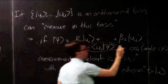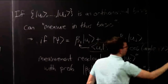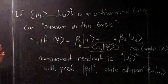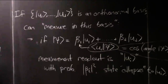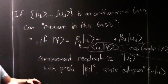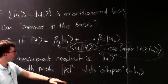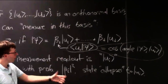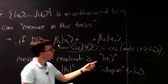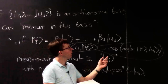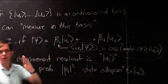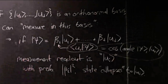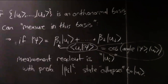Those are a couple of interpretations of the inner product between two unit vectors. In particular, the probability that the measurement reads out i is equal to the square of the cosine of the angle between the true state and the basis vector corresponding to the readout.